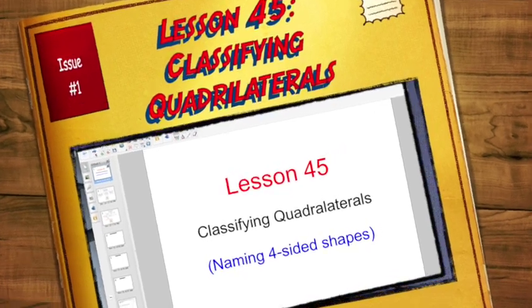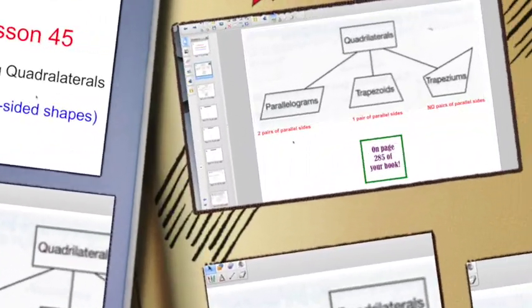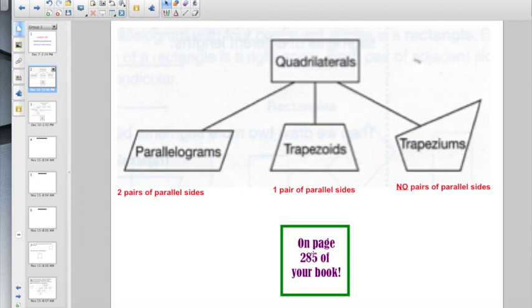Let's take a look and see what's going on today. On page 285 of your book, you're going to see the three main types of quadrilaterals. A quadrilateral, we learned when we were classifying polygons, is any four-sided shape. Now, we have three more classifications here.